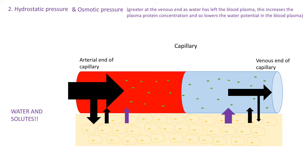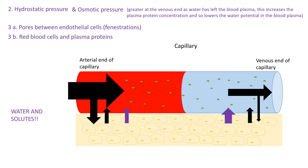For question 3a — how do water and solutes move in and out of the capillary — there are pores, gaps between the endothelial cells, technically known as fenestrations. For 3b, red blood cells and plasma proteins are too big to fit through those gaps and cannot move out. Finally, the process of movement of water and solutes out is called ultrafiltration.